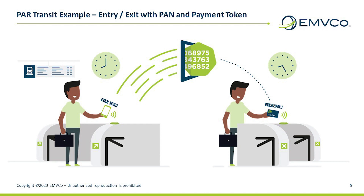Upon exit, in this example, let's assume that your mobile used to enter the transit system ran out of power during the journey, so the transit rider uses their corresponding payment card to exit the transit system. You exit using your payment card at another contactless enabled exit point or turnstile, which receives the PAR data as part of the information passed during the contactless tap. Similar to entry, the turnstile verifies the credential and passes the exit information, including the PAR data, to the transit operator's system.